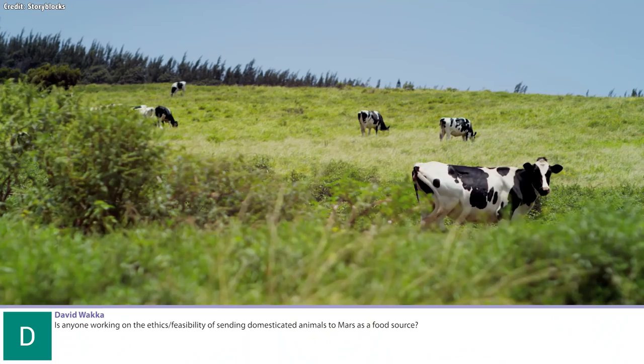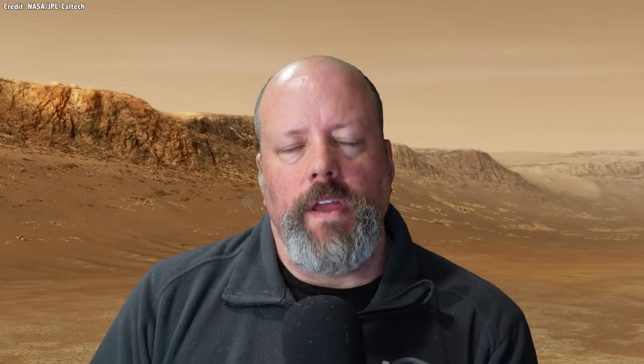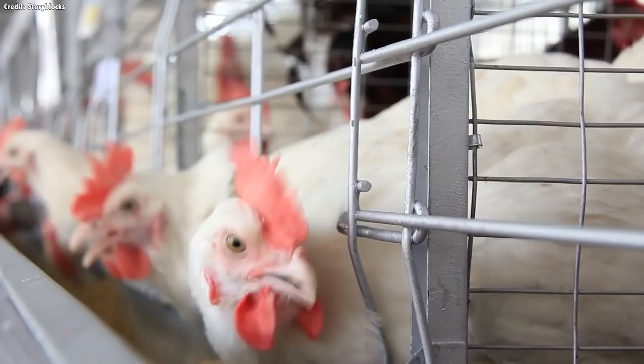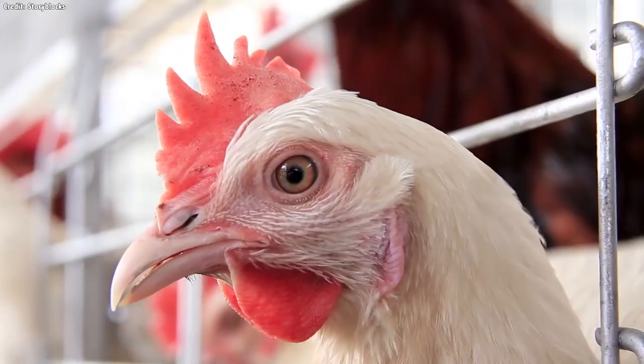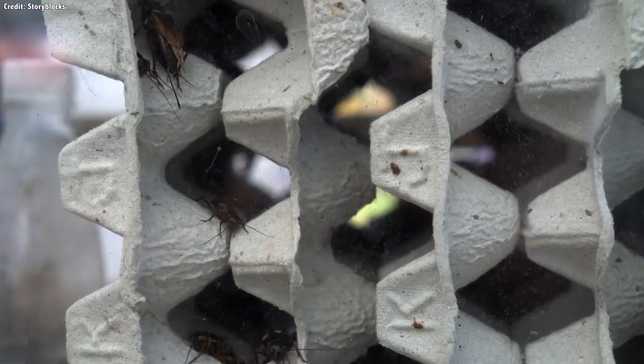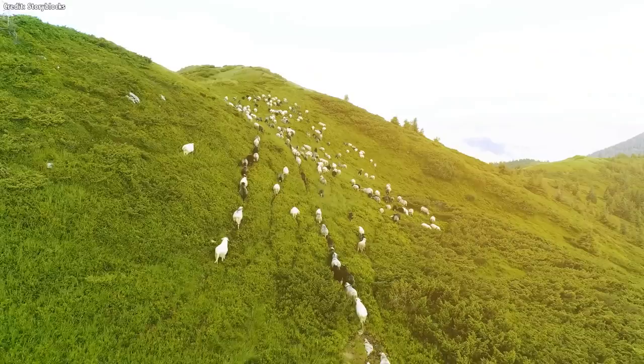David Wacca asks: Is anyone working on the ethics and feasibility of sending domesticated animals to Mars as a food source? We need to break that question into two parts. What are the ethical concerns of sending animals to Mars as a food source? We eat animals already - some people think it's fine, other people think it's bad. So I think you're gonna have the same ethical arguments about eating animals in a spacecraft or on Mars as you do here on Earth. I can't think of any additional issues that would be related to it. People have proposed that if you want to get protein on Mars, you're going to be eating crickets or maybe tilapia fish, that you're not gonna be able to really take something bigger. And that's where we shift into the feasibility question.